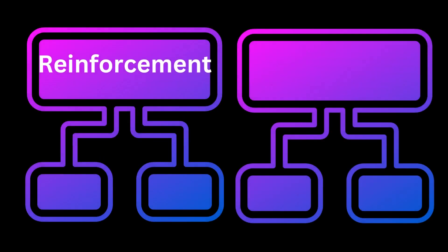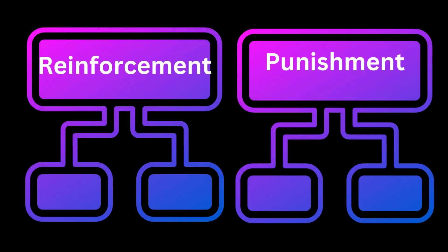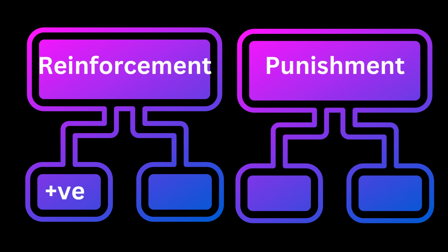Both reinforcement and punishment can be positive or negative, which means we have positive reinforcement, positive punishment, negative reinforcement, and negative punishment.